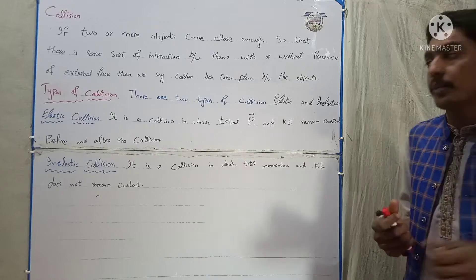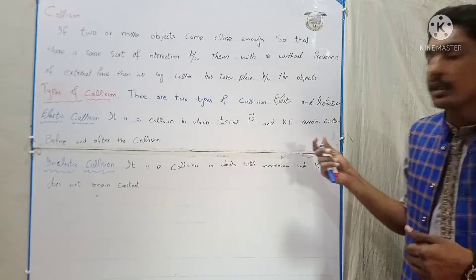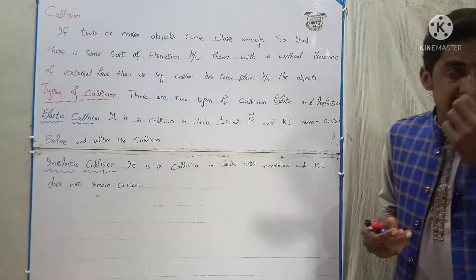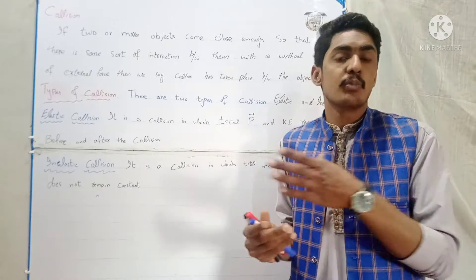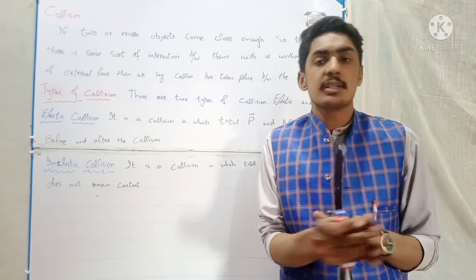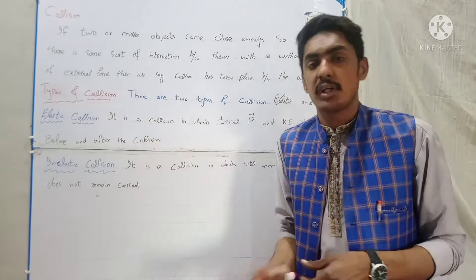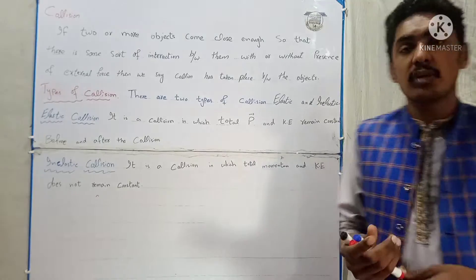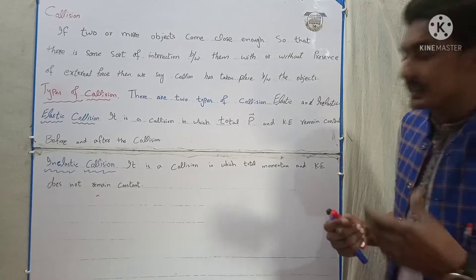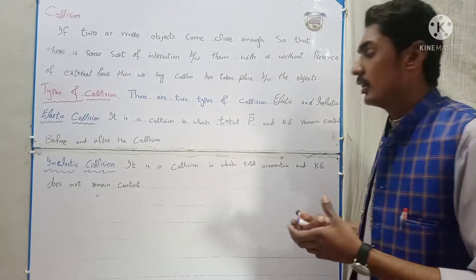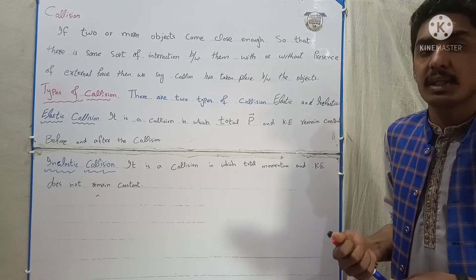Elastic collision is what happens here. It is a collision in which total momentum and kinetic energy remains constant. It is called elastic collision in which total external momentum and kinetic energy and momentum remain constant.